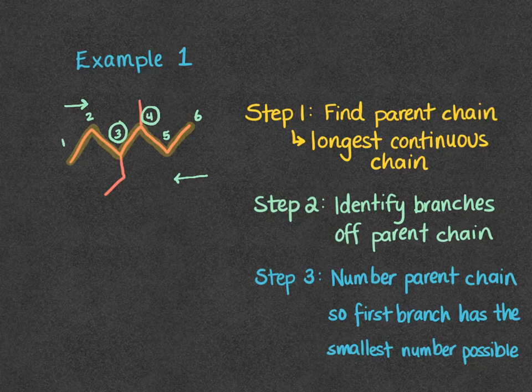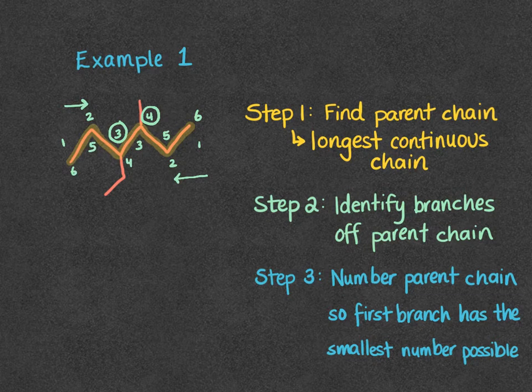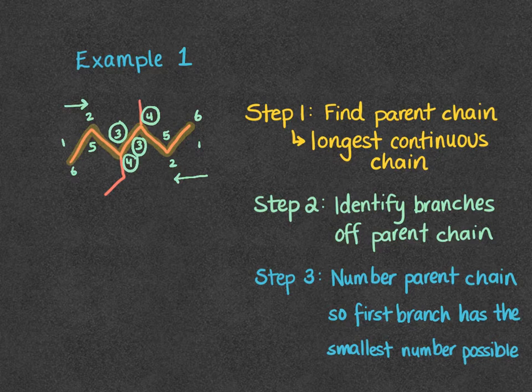If I'm going from right to left, I count one through six, and again my branches land at carbons three and four. So it's a tie.